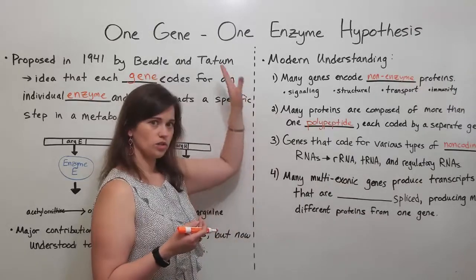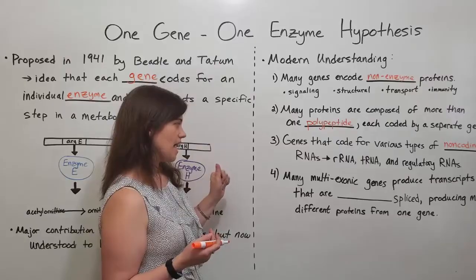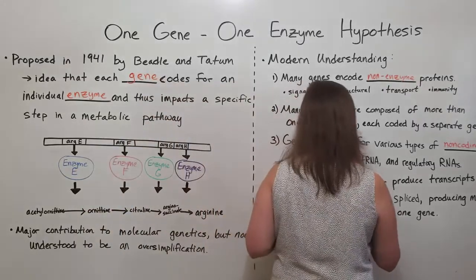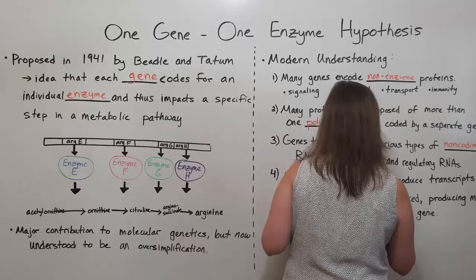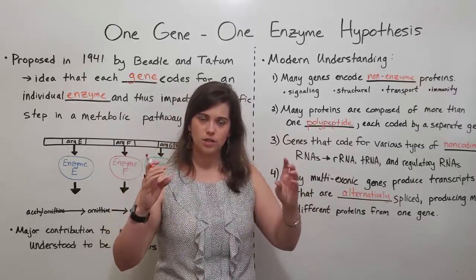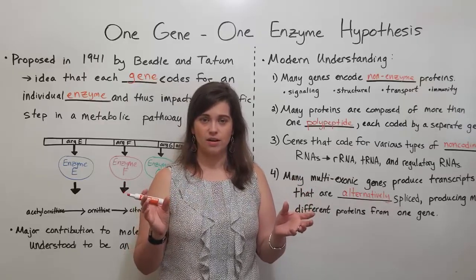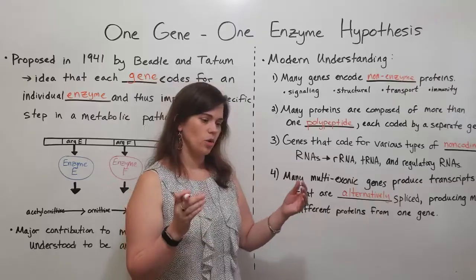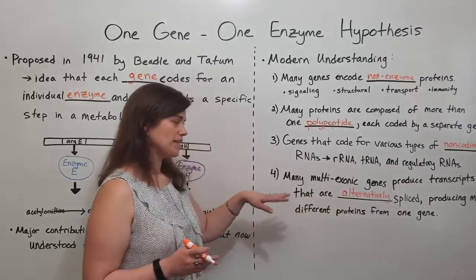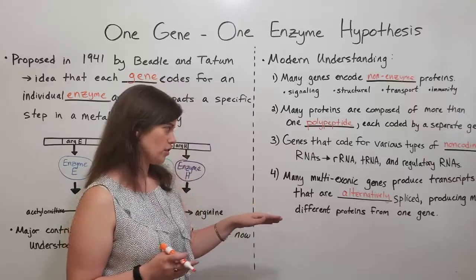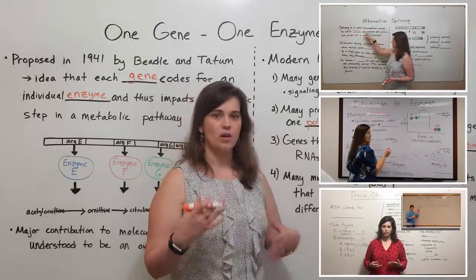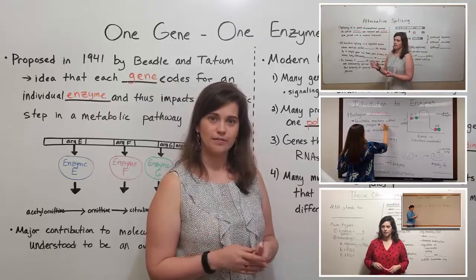Another exception to the one gene one enzyme hypothesis is that many multi-exonic genes produce transcripts that are alternatively spliced. Multi-exonic means a gene that, when transcribed into mRNA, contains more than one exon, and these different exons can be joined together or spliced out in differential patterns through alternative splicing — meaning that from one gene and one mRNA transcript, many different proteins can result. If you're interested in learning more about alternative splicing and how it increases protein diversity, please see my video on alternative splicing.